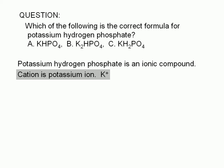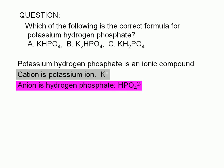The first part of the name of any ionic compound is the name of the cation. The rest of the name has to do with the name of the anion. In this case, it's hydrogen phosphate, and the formula of hydrogen phosphate is HPO4 with a negative 2 charge.